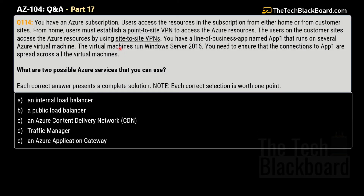Question 114: You have an Azure subscription. Users access resources from home via point-to-site VPN, and from customer sites via site-to-site VPN. You have a line-of-business app named App1 running on several Azure virtual machines running Windows Server 2016. You need to ensure connections to App1 are spread across all virtual machines. What are the two possible Azure services you can use? Note that each correct answer presents a complete solution and each correct selection is worth one point.